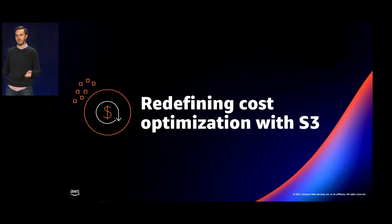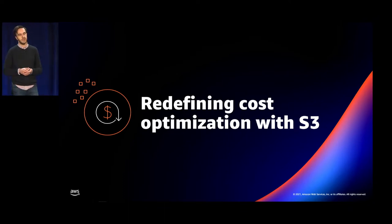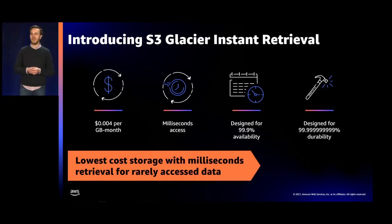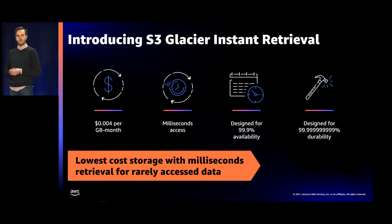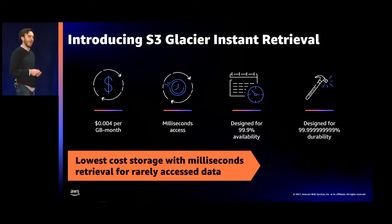I get to talk to all of you about some of the ways that you can fundamentally redefine cost optimization with S3. In particular, I want to highlight two announcements from earlier this week that I think redefine cost optimization and archiving your data with S3. The first is Amazon S3 Glacier Instant Retrieval — a new storage class that delivers the lowest cost storage in the cloud for long-lived, rarely accessed data that requires milliseconds retrieval. It delivers the same latency and throughput performance as S3 Standard and S3 Standard Infrequent Access.